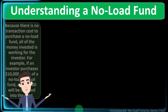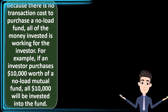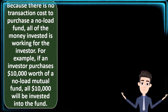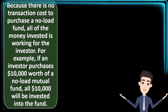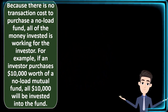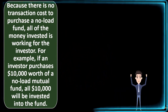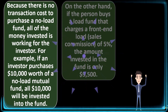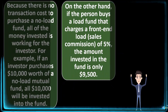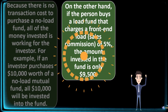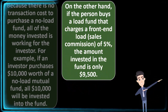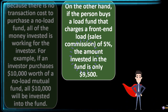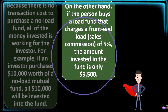Because there is no transaction cost to purchase a no-load fund, all of the money invested is working for the investor. For example, if an investor purchased $10,000 worth of a no-load mutual fund, all $10,000 will be invested into the fund. On the other hand, if the person buys a load fund that charges a front-end load sales commission of 5%, the amount invested in the fund is only $9,500, because you paid the 5% commission.